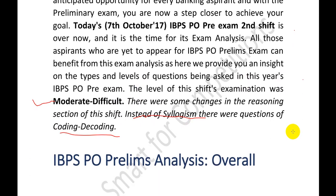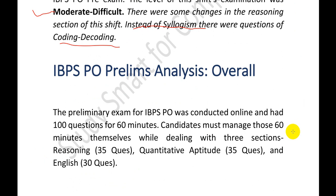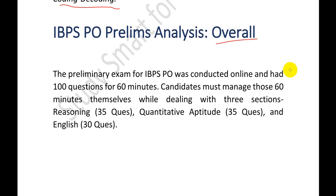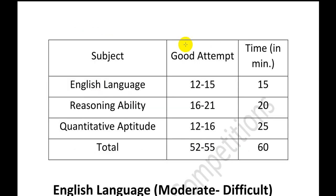Let's have a good insight into each and every section of the exam in detail so you can have a very good understanding of what is happening in IBPS PO prelims. The total questions were 100 for 60 minutes, divided as 35 questions for reasoning, 35 for quant, and 30 for English. We need to manage time as well as attempts.